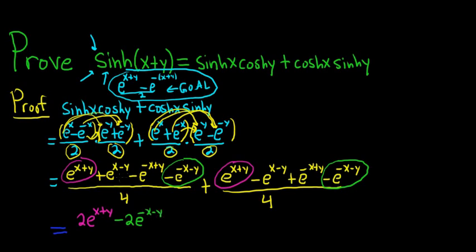Now we have this term here. This e^(x-y). And look, it cancels with this one. And this one here cancels with this one. It works out nicely. So we're just left with this. That's all over 4.